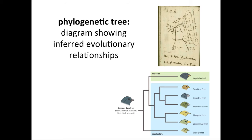This second tree shows the inferred evolutionary relationships among Darwin's finches on the Galapagos Islands. But how are phylogenetic trees like this one built? Any characteristic can be used to infer relationships and build phylogenetic trees, and DNA sequence data has proven incredibly helpful in clarifying and building many important phylogenetic trees. Using large DNA datasets to build trees can get quite complicated, but the underlying principle and logic is pretty straightforward.